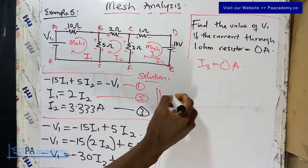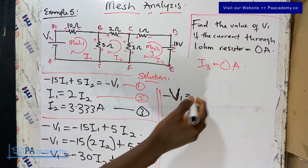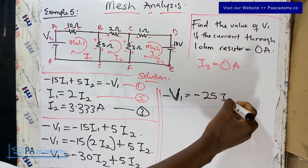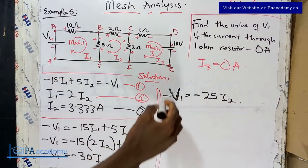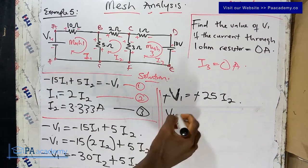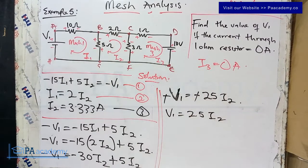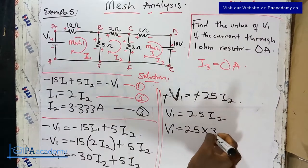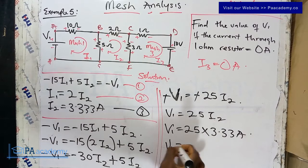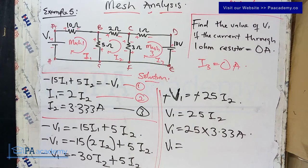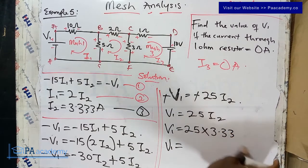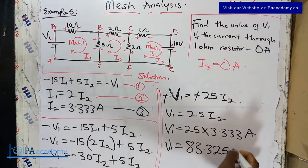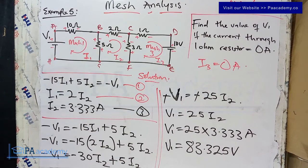So −V1 = −25·I2. Multiplying both sides by −1 gives V1 = 25·I2 = 25 × 3.333 = 83.325 volts. We have now found the value of V1 = 83.325 V when the current through the one-ohm resistor is zero amperes.